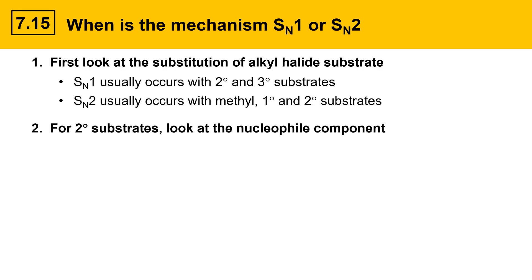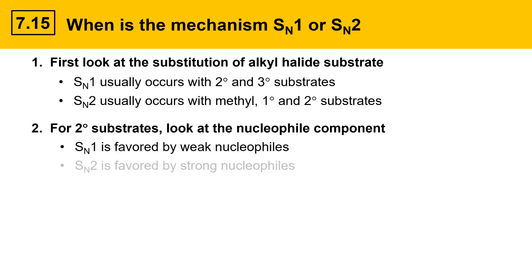For secondary substrates, look at the nucleophile component — that's the other component besides the alkyl halide. SN1 mechanisms are favored by weak nucleophiles, while SN2 reactions are favored by strong nucleophiles. In the SN2 reaction, the alkyl halide is actively attacked by a strong nucleophile. In the SN1 mechanism, weak nucleophiles are not nearly as aggressive — they need a carbocation to react with. Once a carbocation forms, a weak nucleophile will attack it, but only when there's a carbocation.